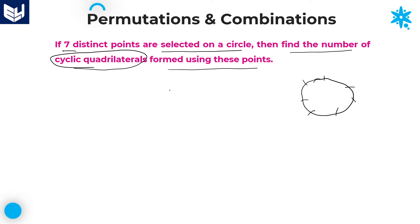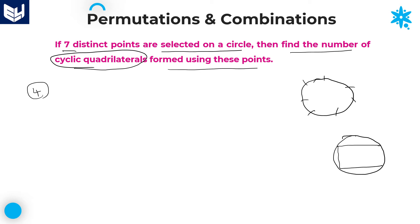Cyclic quadrilaterals are quadrilaterals having exactly 4 sides and 4 points, where all the vertices of the quadrilateral lie on the circumference of the circle. For example, if you observe carefully, this point, this point, this point, and this point — all 4 vertices are lying on the circumference of the circle. That is called a cyclic quadrilateral.